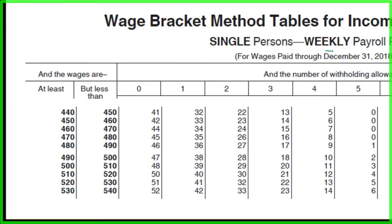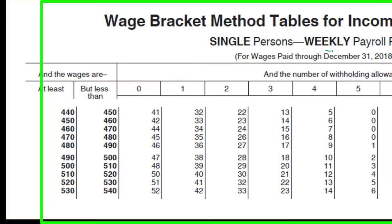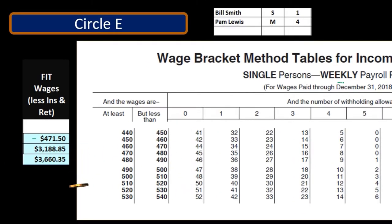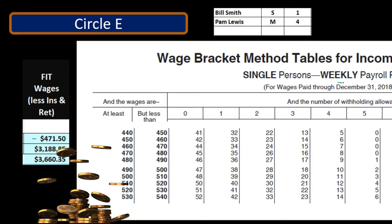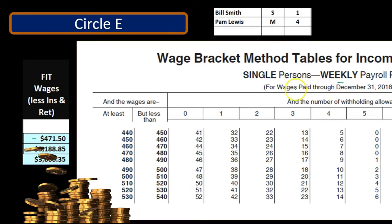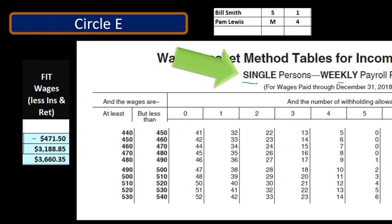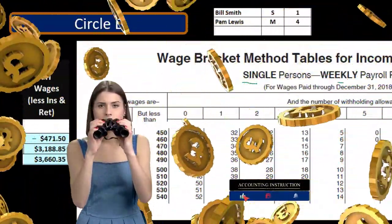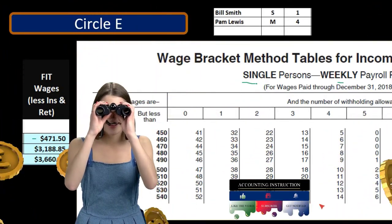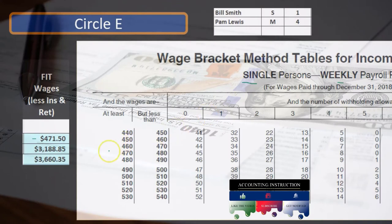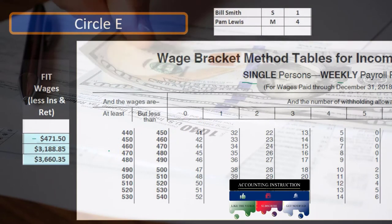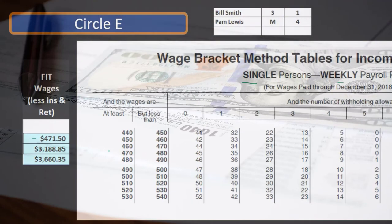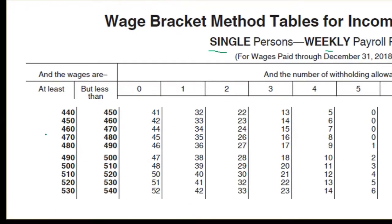There are going to be many tables because we need a different table for each pay period. Ours is weekly in this case; it could be bi-weekly, semi-monthly, or monthly — just make sure not to mix up semi-monthly and bi-weekly, they're different. We also need to know if the person is single or married, so there are two separate tables for each pay period. All this complexity is basically because it's a progressive tax system, so we have to figure out what the tax brackets do, and the tables are one way to do that.